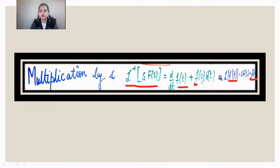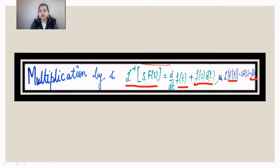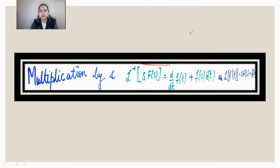The Laplace inverse is also applied on the f(0) term, resulting in f(0)·δ(t), because f(0) is the value of the function at t=0 and δ(t) takes the value 1. So the formula is: Laplace inverse of s·F(s) = d/dt[f(t)] + f(0)·δ(t). We shall now use this to evaluate problems involving multiplication by s.